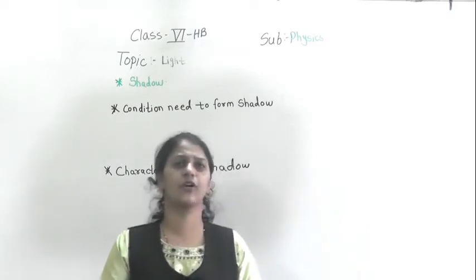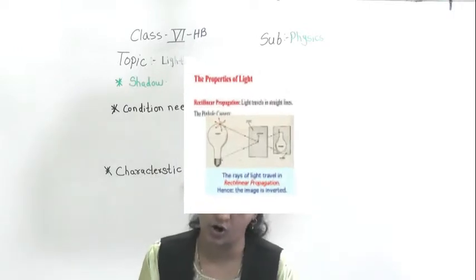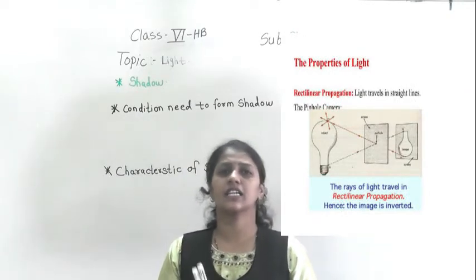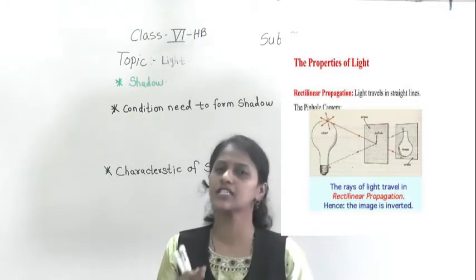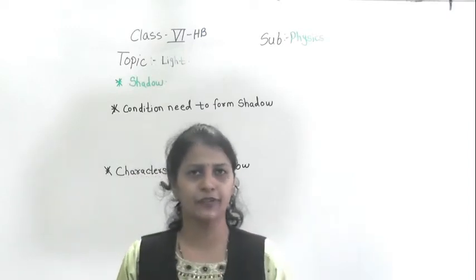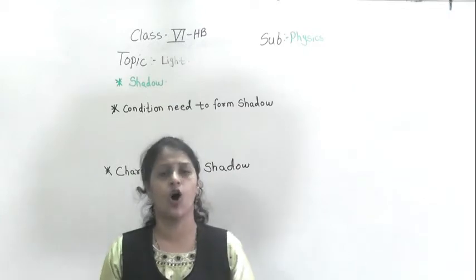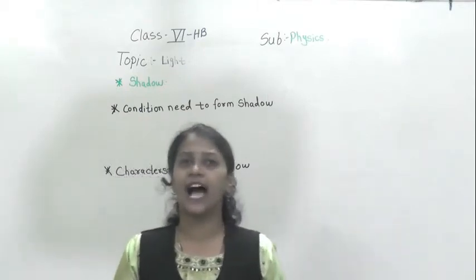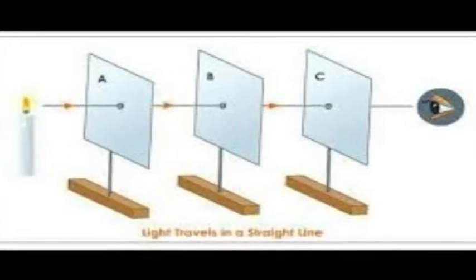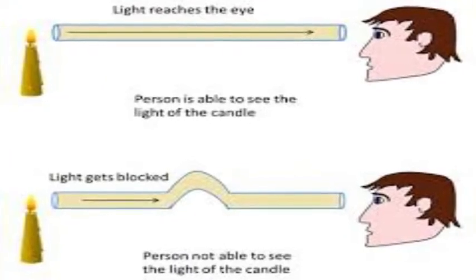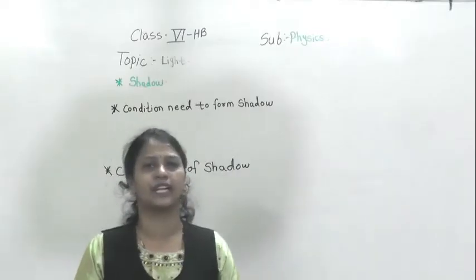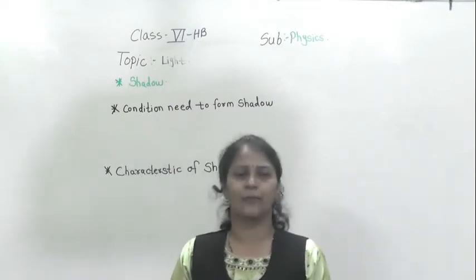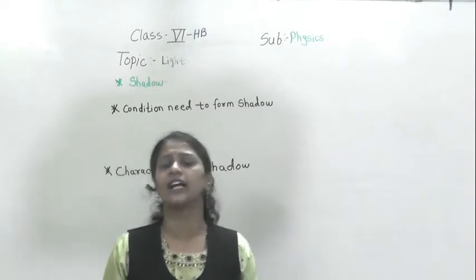In the last video we also discussed the rectilinear propagation of light. When light travels in a straight path, that phenomenon is called rectilinear propagation of light. Related to that we did two experiments using a seeding and a pipe, and proved that light always travels in a straight line. This was a recall of the last two videos.